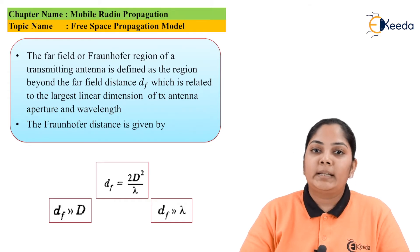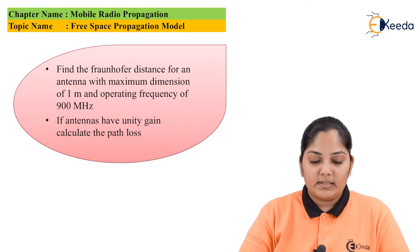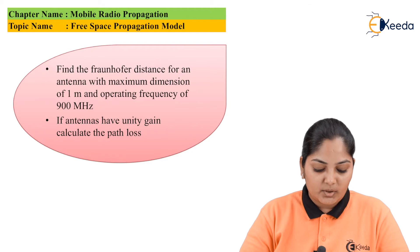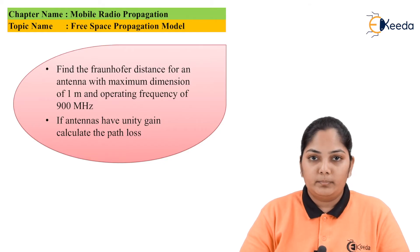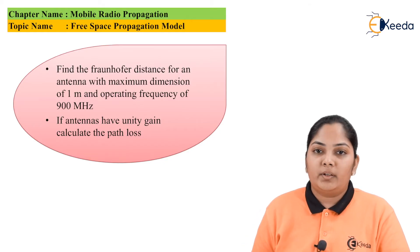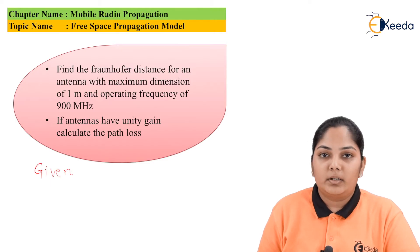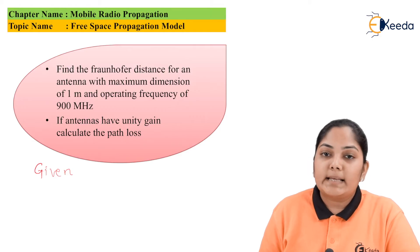Now let us move on to a numerical problem. Find the Fraunhofer distance for an antenna with a maximum dimension of 1 meter and an operating frequency of 900 MHz. If the antennas have unit gain, calculate the path loss. The given information: operating frequency f = 900 MHz, and antenna dimension D = 1 meter.